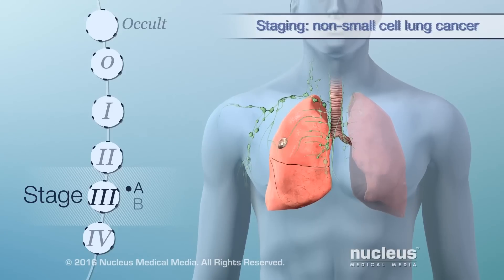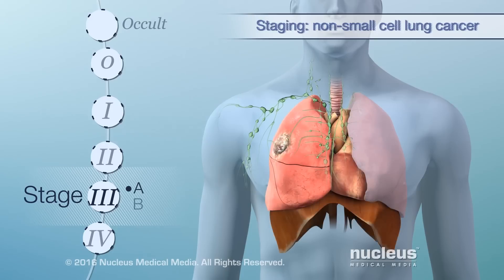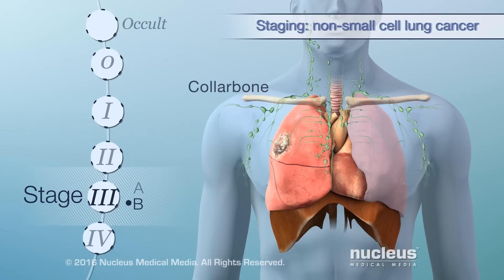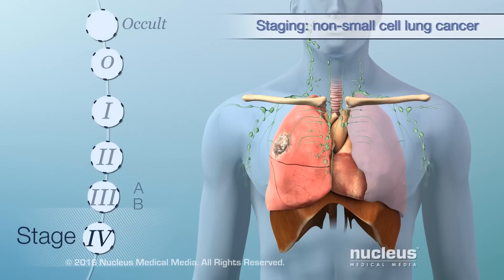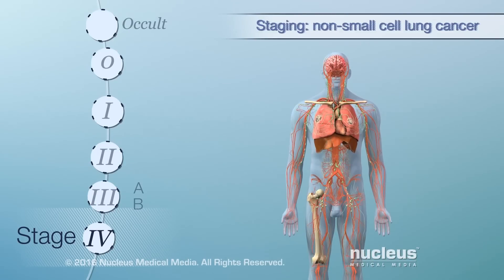In stage 3a, the tumor has grown to any size. In addition, cancer is found in lymph nodes on the same side of the chest or in nearby organs. Stage 3b is similar to 3a, but in 3b, cancer is found in lymph nodes on the opposite side of the chest. Cancer may also be found in lymph nodes above the collarbone. In stage 4, tumors might be found in both lungs, and cancer may have spread to distant organs.